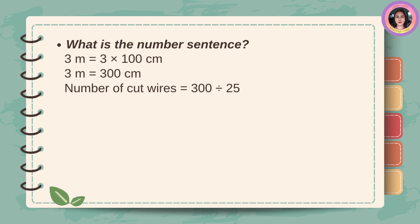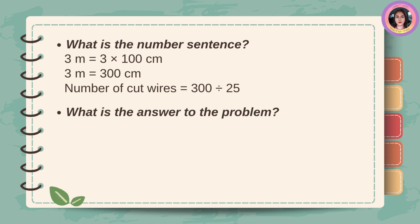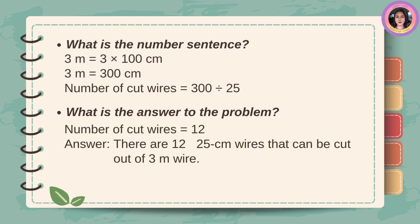Number of cut wires equals 300 divided by 25. Answer: There are 12 25-centimeter wires that can be cut out of a 3-meter wire.